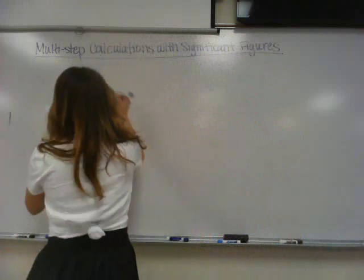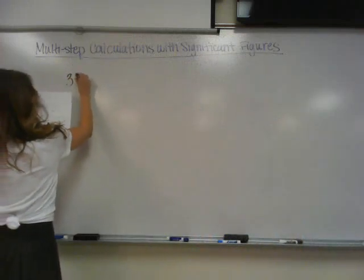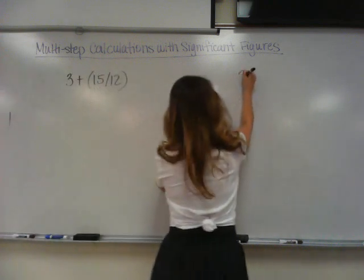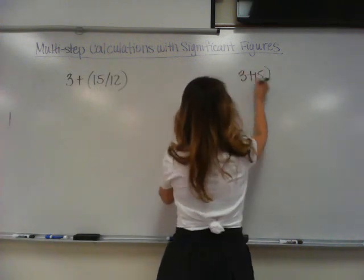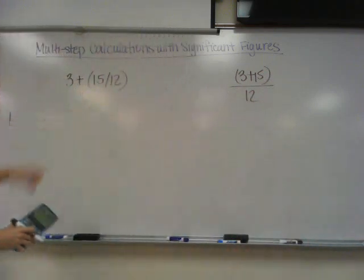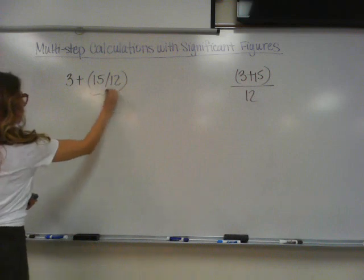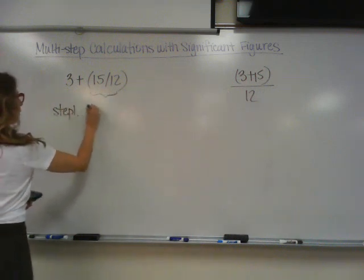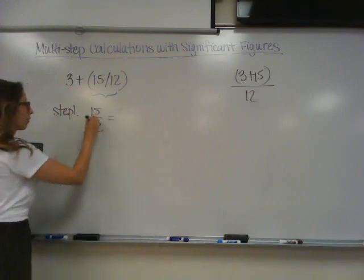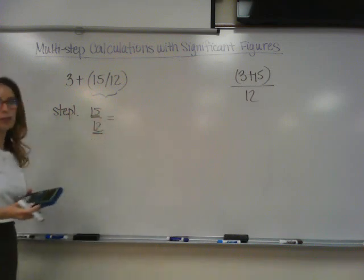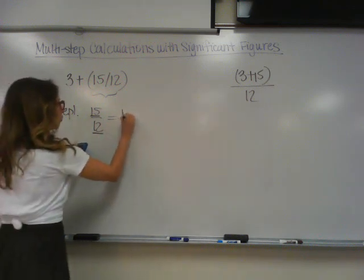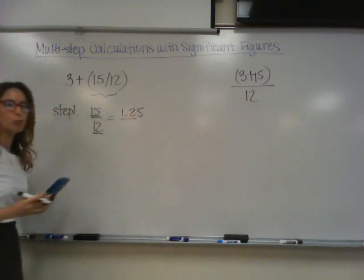Student exercise number 14. 3 plus 15 divided by 12 is one of them. What's the first operation you're going to do? Parentheses. So step number 1: 15 divided by 12. I'm dividing, so I count sig figs. I have two significant figures in 15 and two significant figures in 12, so I want two sig figs in my answer. 1.25 — you should underline the 1.2.